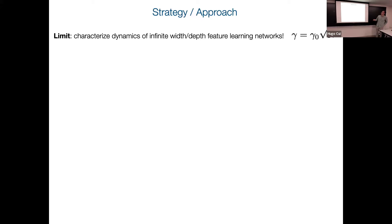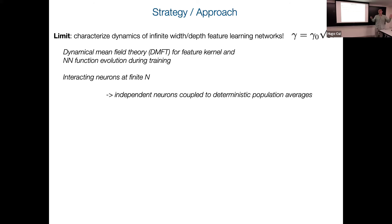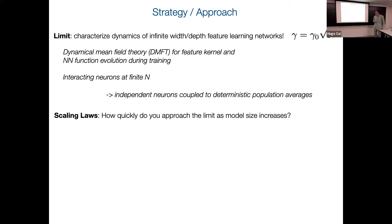The proposal is: to characterize what a finite-width neural network is doing, first characterize what happens in infinite width in this feature-learning parameterization. The strategy is to find the limit using infinite width or infinite depth with this scaling. At finite width, you have neurons interacting in complicated ways, all depending on the initial weight matrices. But as you take the limit, all neurons become independent and only couple through macroscopic deterministic population averages — basically feature kernels through time and every layer.